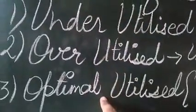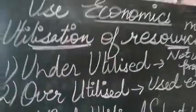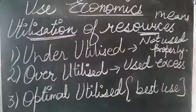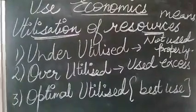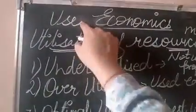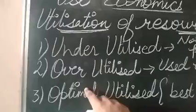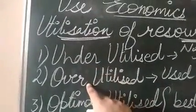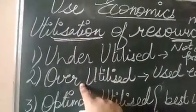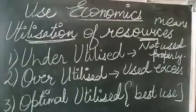These are three types of uses which we will discuss one by one. To conclude this session: utilization means use, and the use is possible in three ways — best use (optimal), underuse (underutilized), and overuse (overutilized). Let's conclude it for this session — take care, see you again soon.